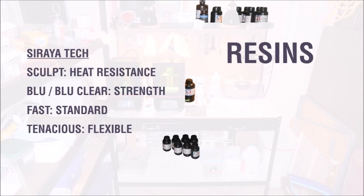Sculpt has high heat resistance, Blue and Blue Clear are really strong, Fast is a good all-around resin, Tenacious is real flexible. If you want to visit their website, they have all kinds of data sheets and information on all of these various resins that they sell.